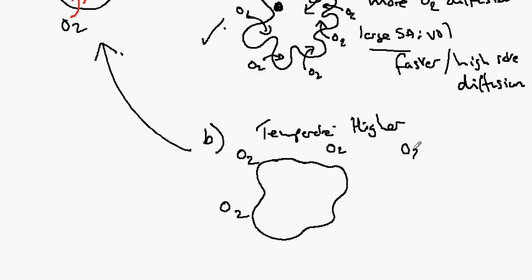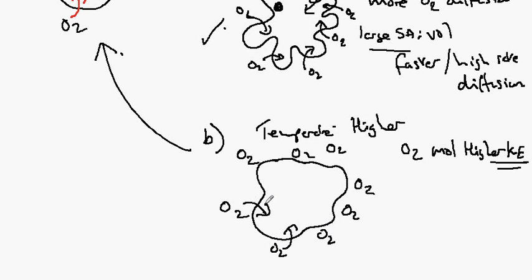So the oxygen molecules have a higher kinetic energy which means that they are moving more. So they are more active and moving in all sorts of directions. And the opportunity to collide with the cell and to move into the cell is increased because they are moving more. So high temperatures overall have the effect of increasing the rate of diffusion.